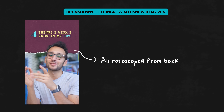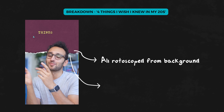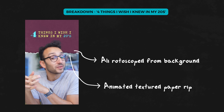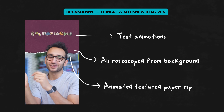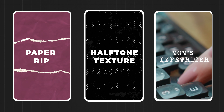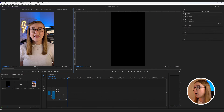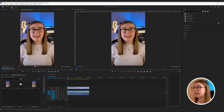To break it down, we have Ali cut out and rotoscoped from his background. At the top we also have a textured paper rip that animates left to right in stop motion fashion, and we also have some text animations going on as well. To replicate this, the assets I'm going to be using are a paper rip, an animated halftone texture, and the Mum's Typewriter font. To start, I'm going to add my video onto my timeline and then duplicate the video onto the third layer.